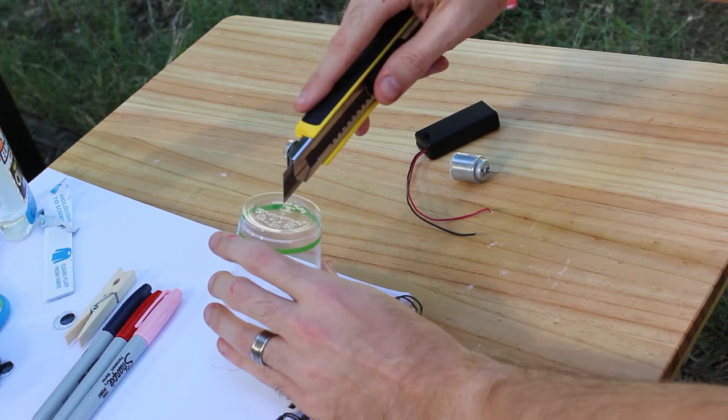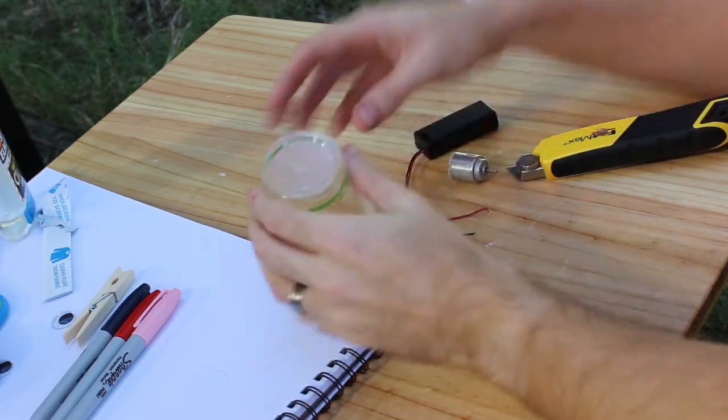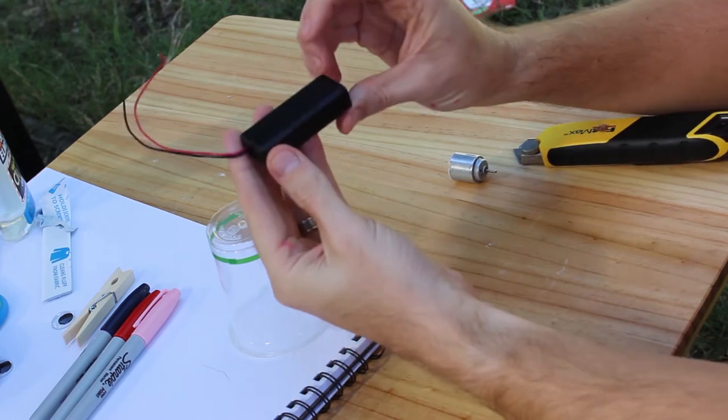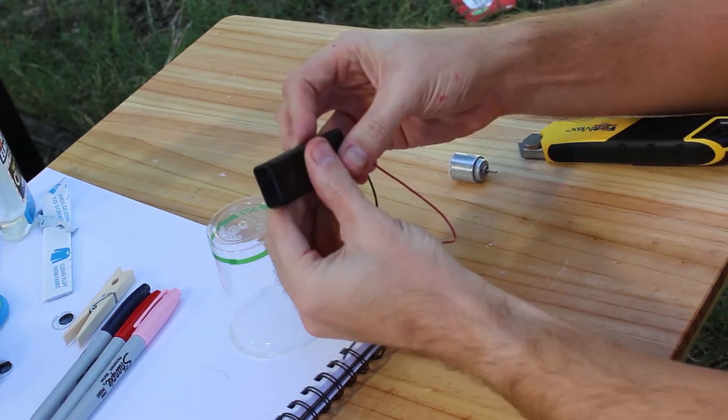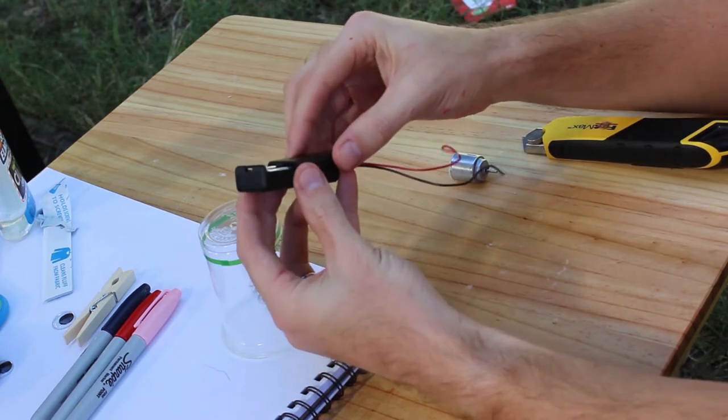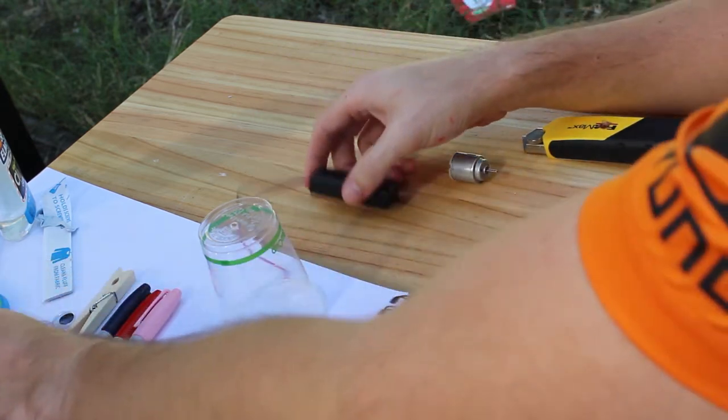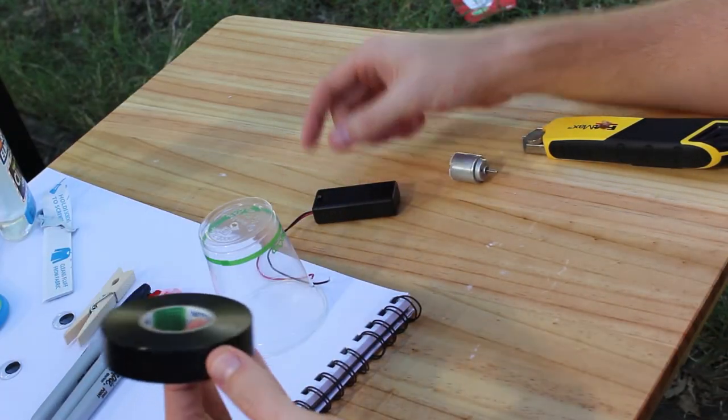Next step for us is we have this battery pack here. It's three volts, it's got two one and a half volt batteries in there, triple A's. And we're going to tape that to the inside of the cup using some electrical tape.